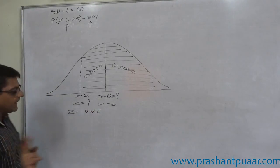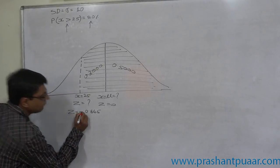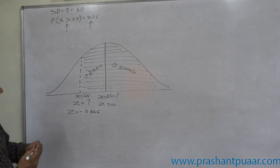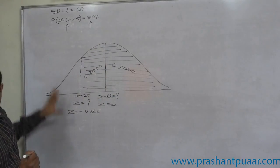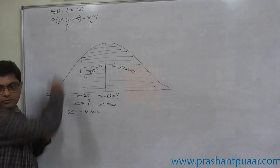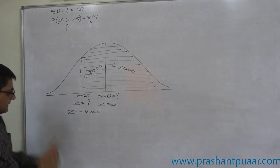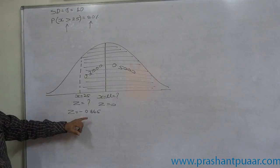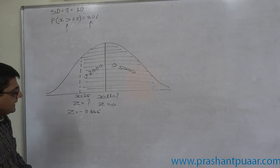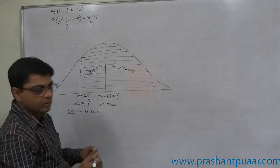But technically, z takes negative value because it falls on the left-hand side area. And we know that on the left-hand side area, all z-scores are negative. So z-score for us is minus 0.845.